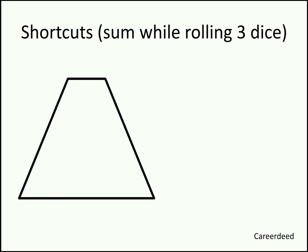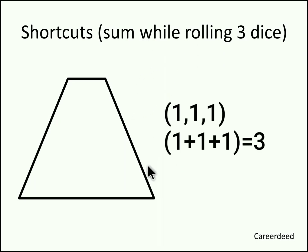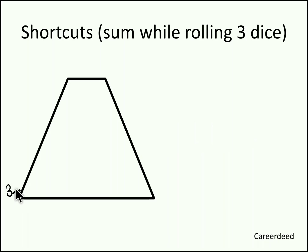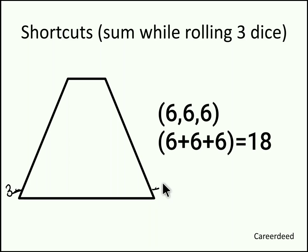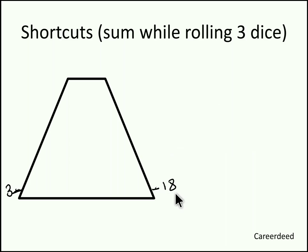Similar to finding the sum of faces while rolling 2 dice, we have shortcuts for finding the sum of faces of 3 dice also. The minimum total sum of faces while rolling 3 dice is 3, that is (1,1,1) — when you sum 1+1+1 you get 3 — and the maximum total sum is 18, that is (6,6,6) — when you sum 6+6+6 you get 18.